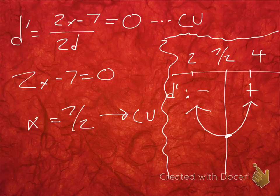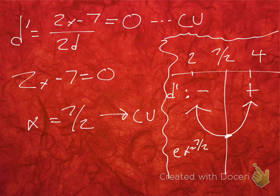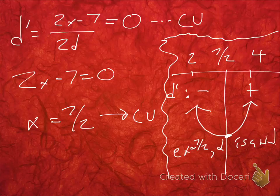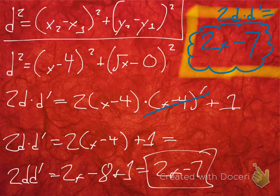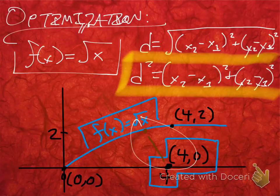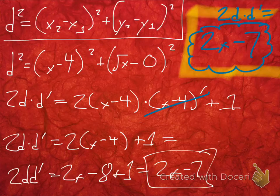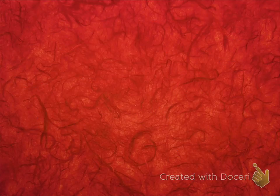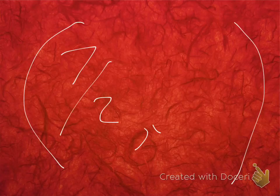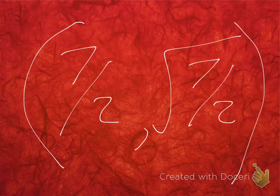So, we can say, at x equals 7/2, d is a min. Yes! Good! d is a minimum. So, we've minimized the function. We've optimized the function. We've minimized the distance between here and here. So, we know that our point of minimum distance is (7/2, √(7/2)). And that's all there is to it.